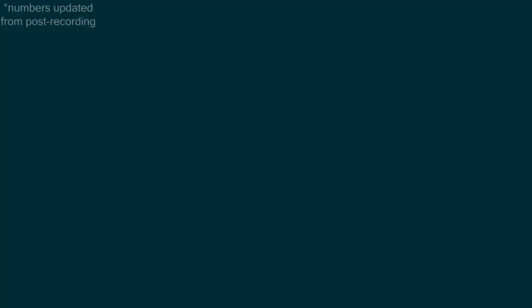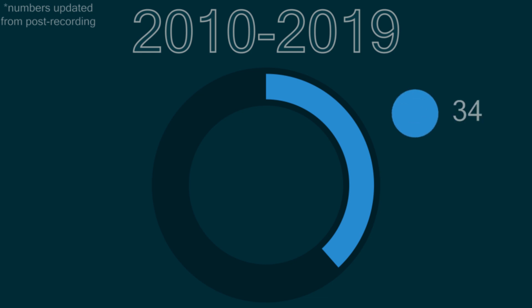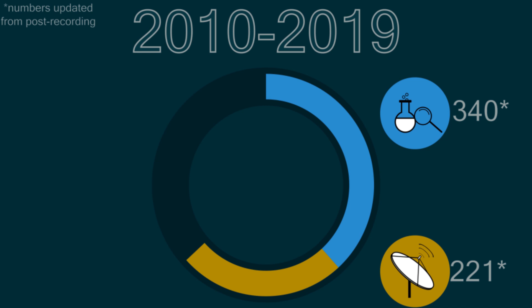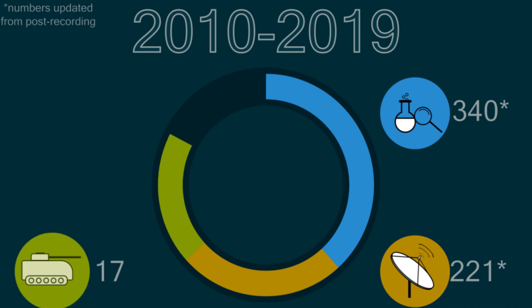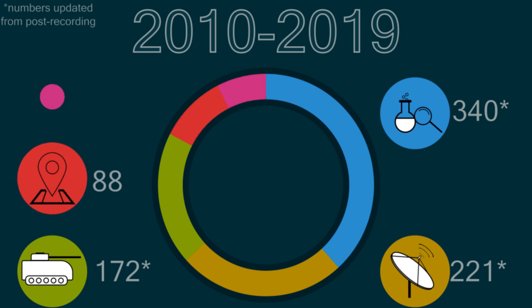Before comparing different US companies, let's talk about the purpose of these missions. From 2010 to 2019, out of the 887 orbital launches: 323 had some form of scientific intention, 221 were a form of communications satellite, 176 had a main military intention, 88 were navigation satellites, and 64 were technology demonstrators. So science is still the main presence in space.